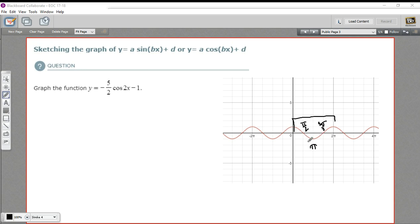These points, 0, π over 2, π, 3π over 2, and 2π, those are really important points because it's where the function is at its maximum, its minimum, and where it's at 0.